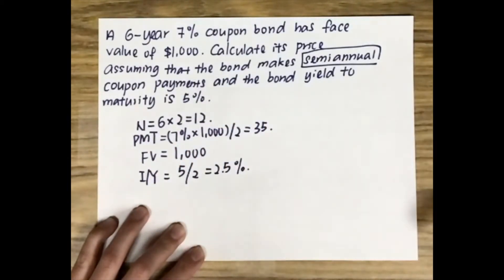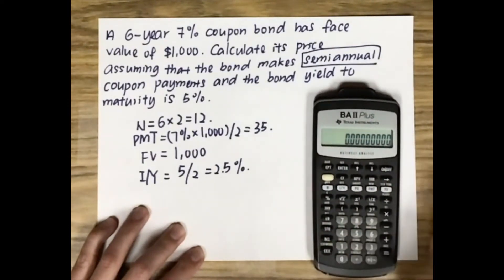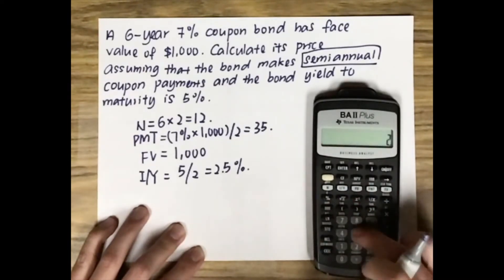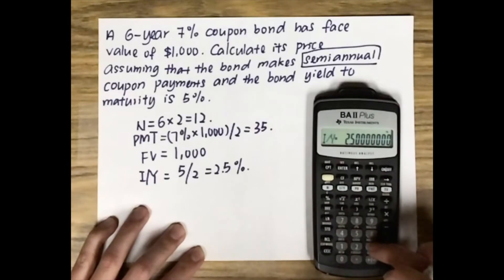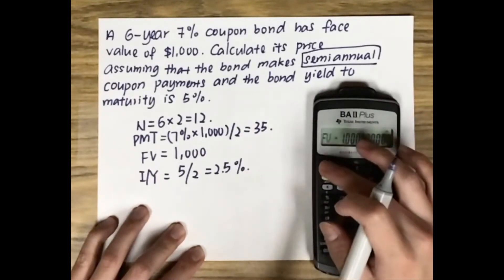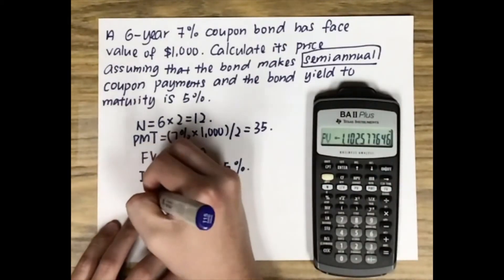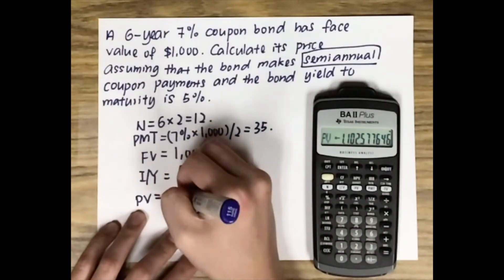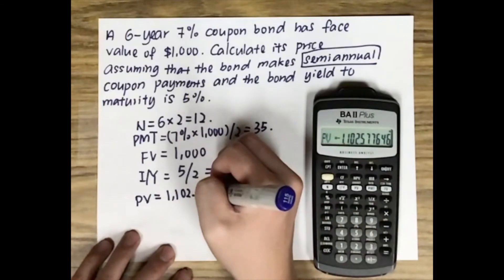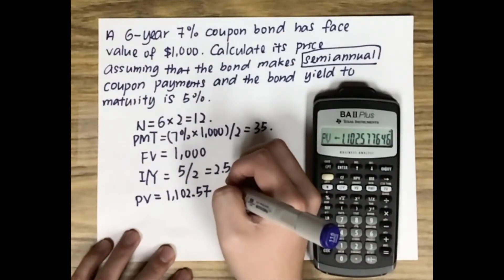Now that we have all the numbers we need, we can plug them into the financial calculator. N is 12, IY is 2.5, PMT is 35, and FV is $1,000. Press compute and press PV. We get a PV of $1,102.57. So the price of this bond is $1,102.57.